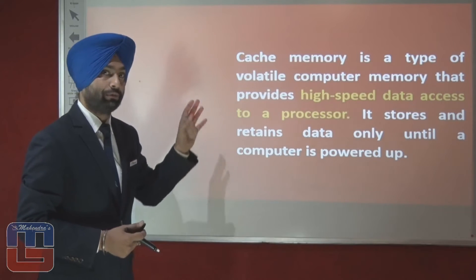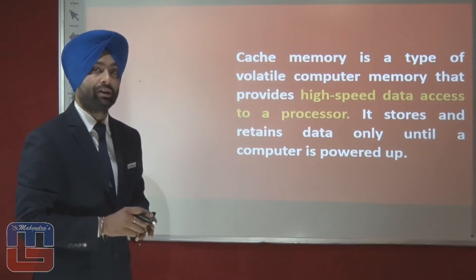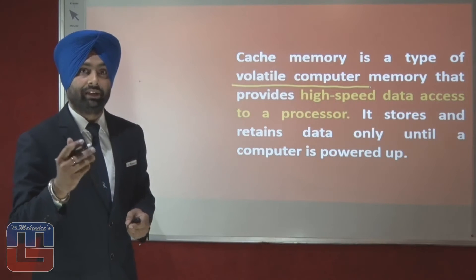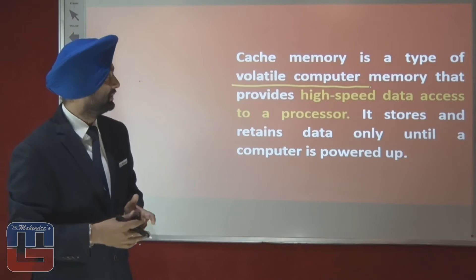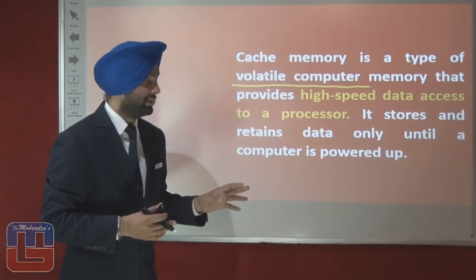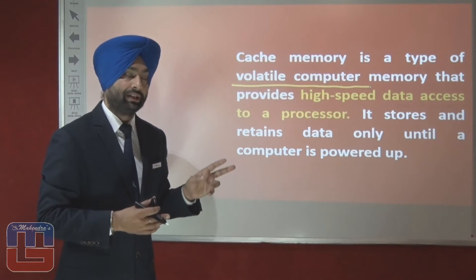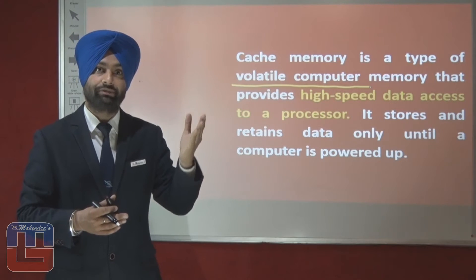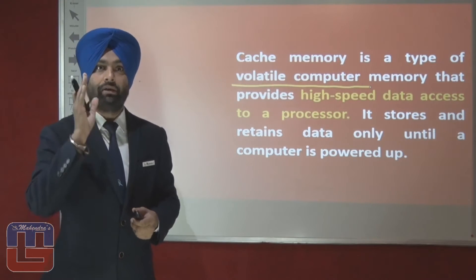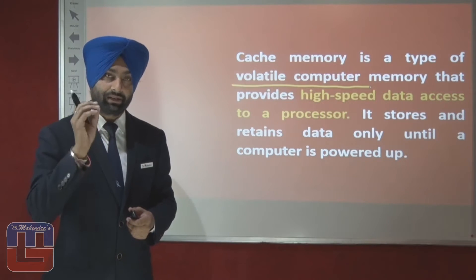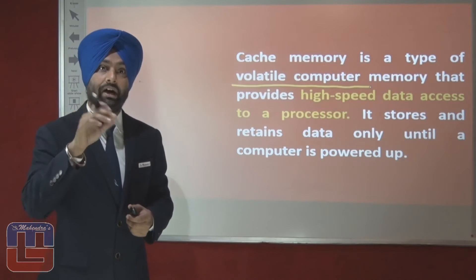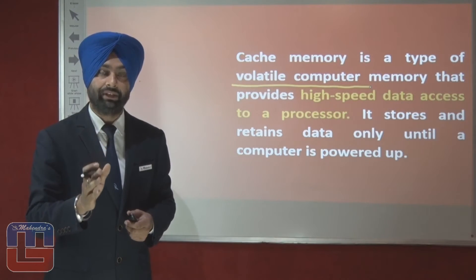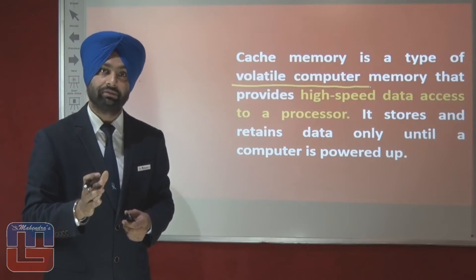Cache memory is a type of volatile computer memory, very similar to primary memory. It is volatile, which means that as long as the computer is powered on, the cache will hold the data, and as soon as the power is disconnected, the data on the cache will be wiped out. An exception among primary memory volatile types is ROM — ROM can hold data even after the power is switched off.